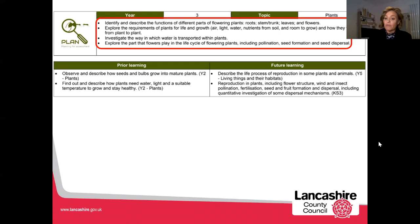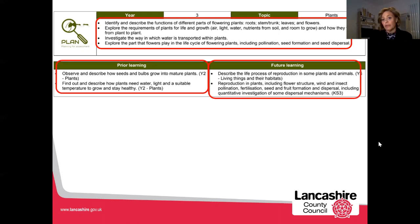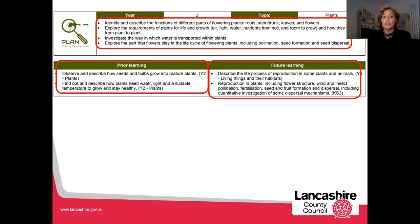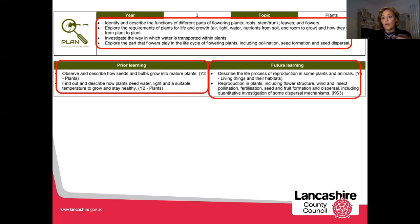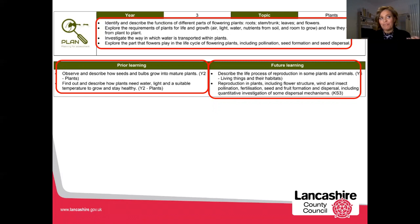Below the requirements we have the prior and future learning, which is really useful for several reasons. Firstly, we can use the prior learning to see when the children last came to this concept. For Year 3 Plants, they last came to this area of learning in Year 2. We can use that prior learning as AFL at the beginning of a unit to see if children can retrieve any information and recall vocabulary from that unit.